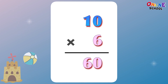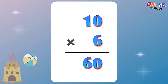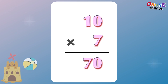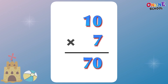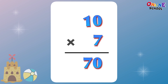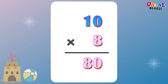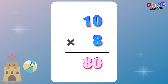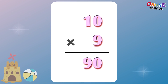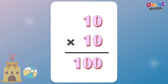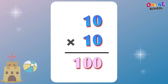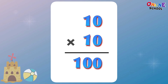10 times 1 equals 10. 10 times 2 equals 20. 10 times 3 equals 30. 10 times 4 equals 40. 10 times 5 equals 50. 10 times 6 equals 60. 10 times 7 equals 70. 10 times 8 equals 80. 10 times 9 equals 90. 10 times 10 equals 100.